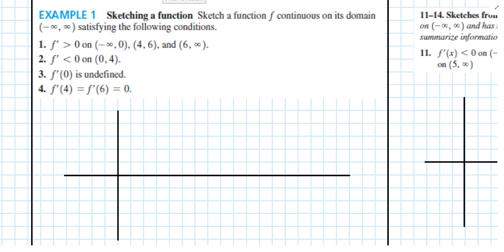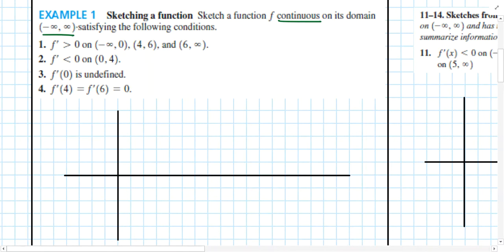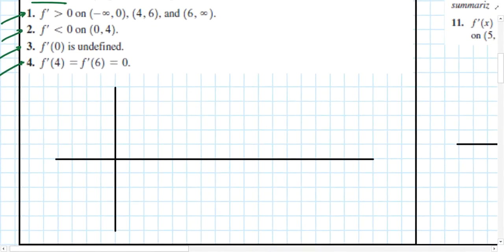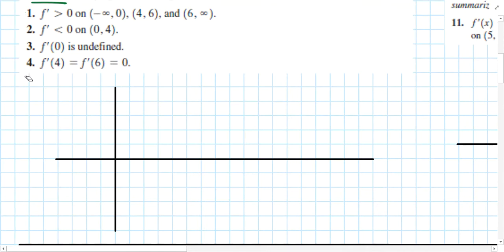Before we actually use the first derivative test, I want to double-check our ability to interpret descriptions of a function. We have a function f, but we don't know the equation. We know it's continuous for all real numbers, and it has four characteristics listed. I want to see if you can sketch a picture of this graph based on those four characteristics. Pause the video and try to sketch this graph on the provided axis, then resume playback to check your work.